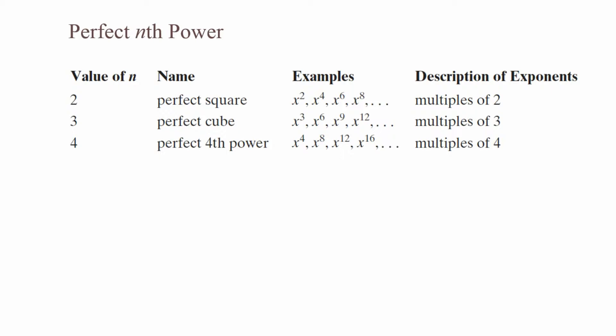Perfect nth power. If our value of n is 2, which means we're looking at the second power, we have a perfect square. Some examples are x squared, x to the fourth, x to the sixth, x to the eighth. Any exponent with a multiple of 2 is a perfect square. If our value for n is 3, we're looking at a perfect cube, which is x cubed, x to the sixth, x to the ninth, x to the twelfth. Any exponent that is a multiple of 3 is a perfect cube.